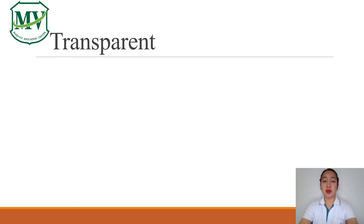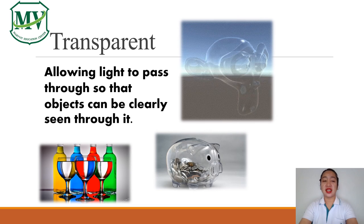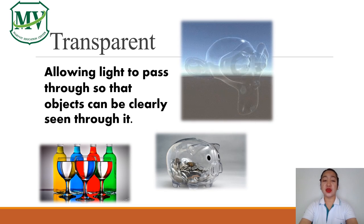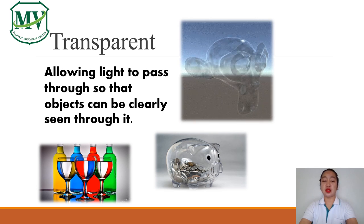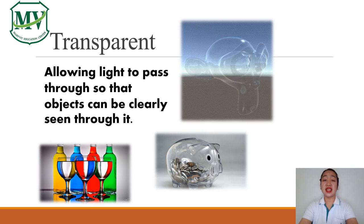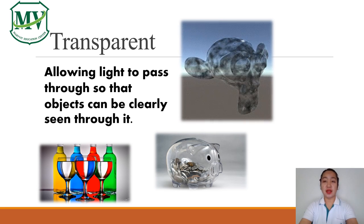Next, transparent. It is allowing light to pass through so that objects can be clearly seen through it. In other words, it is clear. Examples are clear glasses and a clear coin bank.